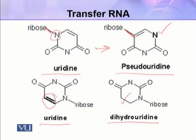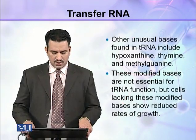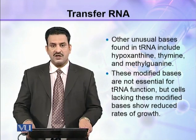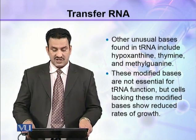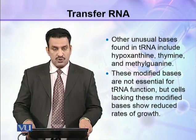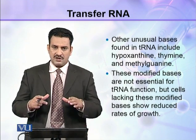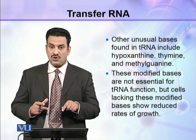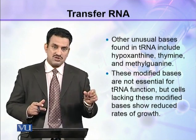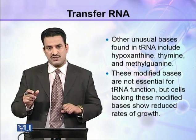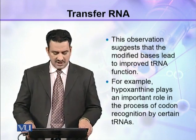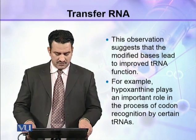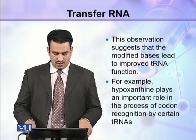These are the unique bases found in tRNA. Other unusual bases found in tRNA include hypoxanthine, thymine, and methylguanine. These modified bases are not essential for tRNA function, but cells lacking these modified bases show reduced rates of growth, indicating their role in translation. This observation suggests that the modified bases lead to improved tRNA function — for example, hypoxanthine plays an important role in the process of codon recognition by certain tRNAs.